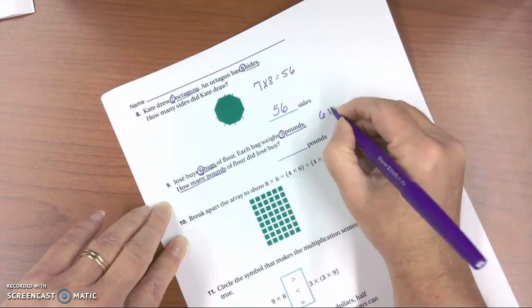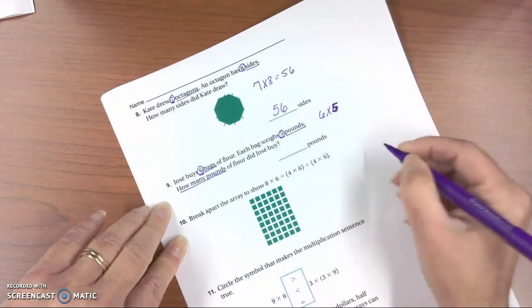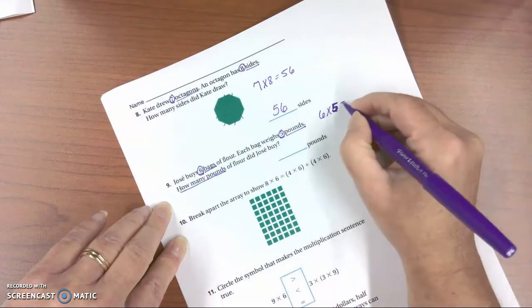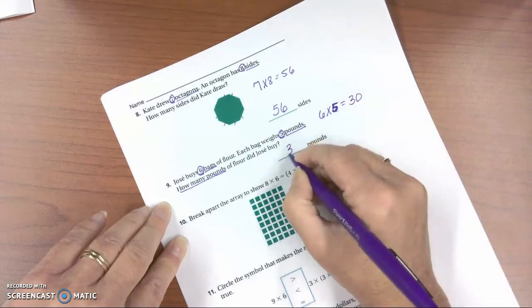you're going to multiply 6 times 5. Let me make that 5 there. 6 times 5. I'm going to count by 5s very quickly, and that is 30, so it's 30 pounds.